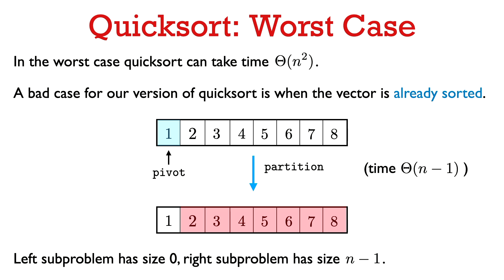Now let's look at the worst-case complexity. The worst case arises when the two sub-problems are as lopsided as possible, and for this version of QuickSort this happens when the input vector is already sorted. For example, with the numbers one through eight, we use one as the pivot — but there are no numbers less than one, so the left sub-problem has size zero and the right has size seven. In general with n elements, the right sub-problem has size n-1.